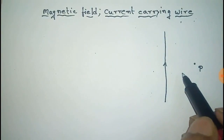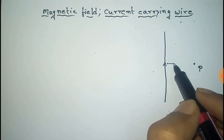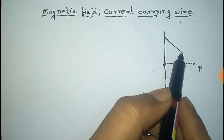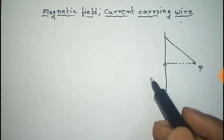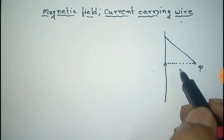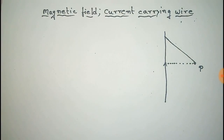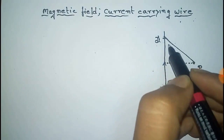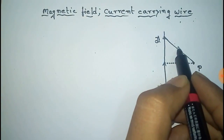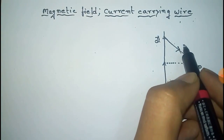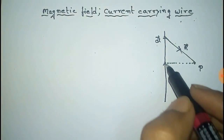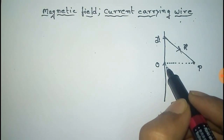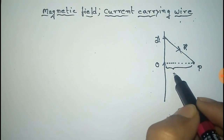The distance from P to the current-carrying wire is the perpendicular distance. The arbitrary distance from P to the wire is R. The total length of the wire is L, so the small distance element can be written as dL vector. This is R vector, the arbitrary distance. If this point is O, then the distance OP is taken as A, which is a constant.